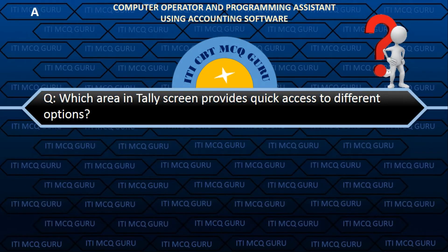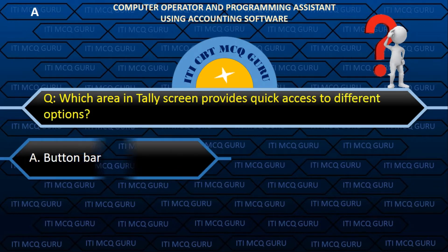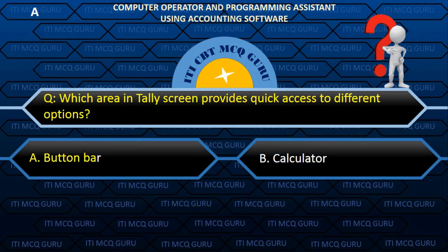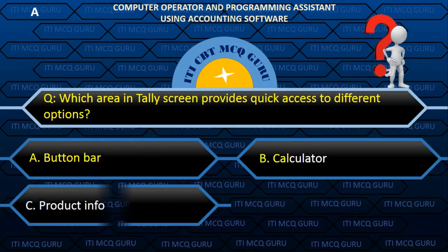Which area in the Tally screen provides quick access to different options? A. Button bar.